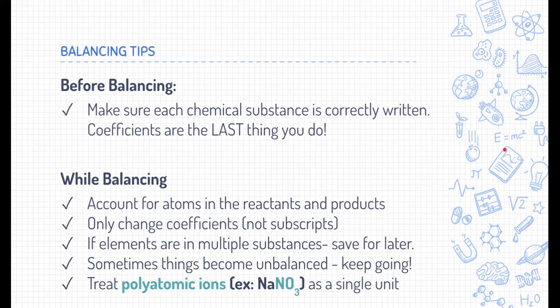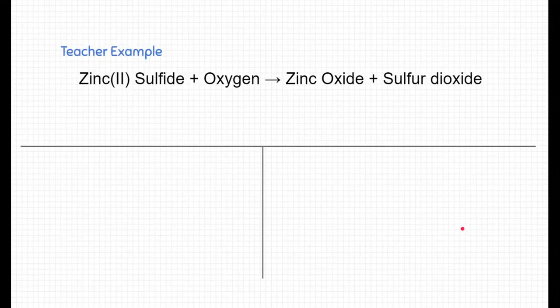The last thing is to treat polyatomic ions as a single unit. Now, if you don't know what a polyatomic ion is, I'll give you a hint for now. Look at a chemical formula. If you see more than two elements, there's a polyatomic ion in there. For example, right here, this is sodium nitrate. This has sodium, nitrogen, and oxygen in it. And sodium and oxygen, this NO3 right here, is called nitrate. It's a polyatomic ion.